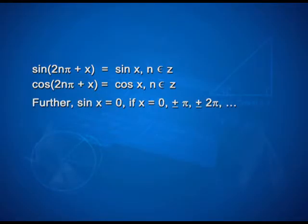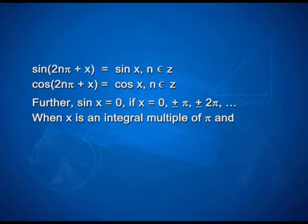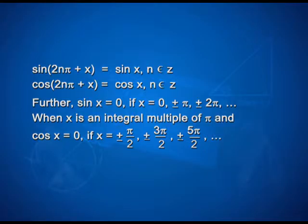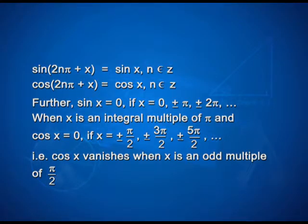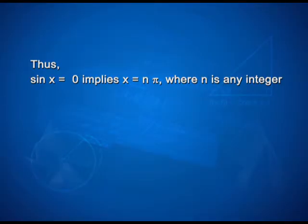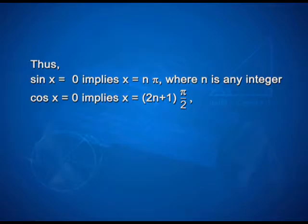Further, sin x = 0 if x = 0, ±π, ±2π, ±3π, and so on — that is, when x is an integral multiple of π, so sin x = 0 implies x = nπ, where n is any integer. Cos x = 0 when x is an odd multiple of π/2, that is, cos x = 0 implies x = (2n+1)π/2, where n is any integer.